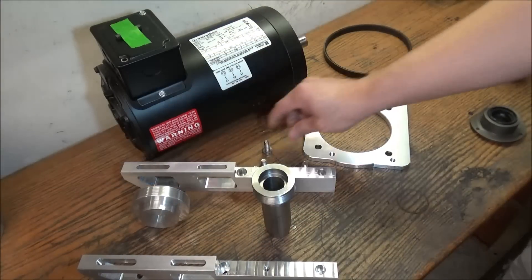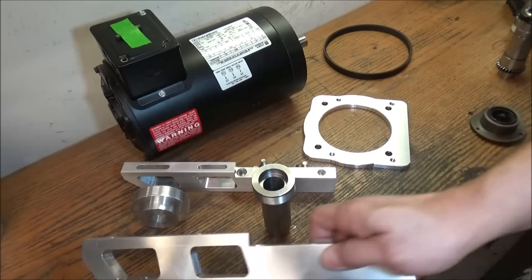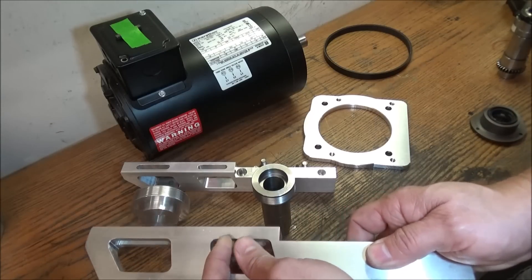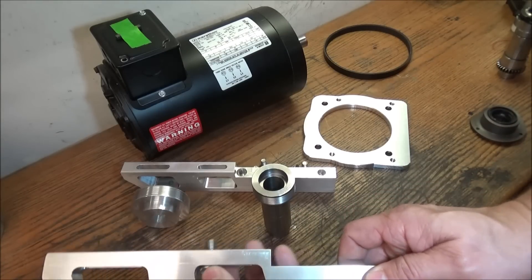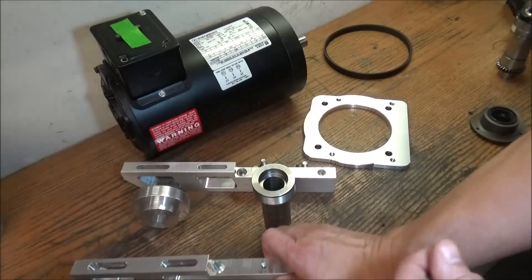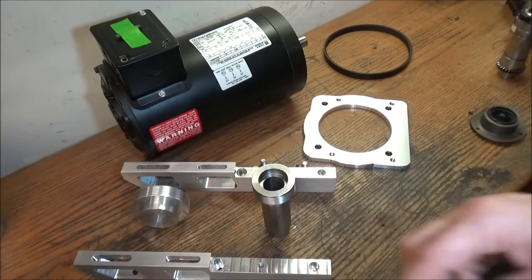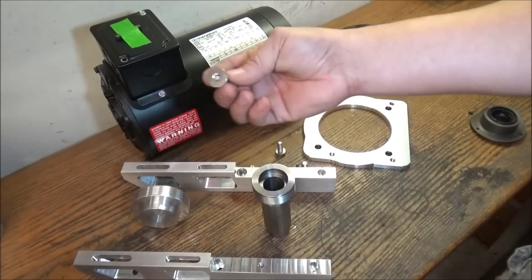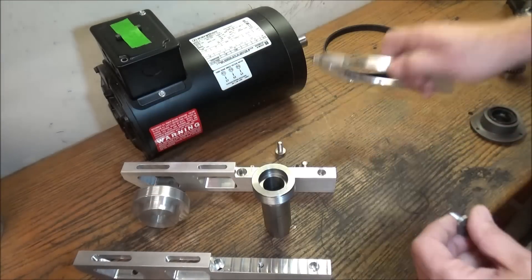It's going to come with a belt. The motor mount plate bolts in like that and you have these adjustment slots to adjust the belt tension. It comes with all the hardware to mount the motor.